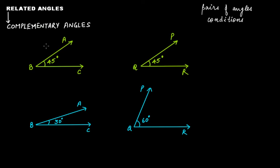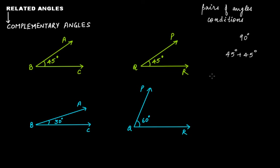The first type is complementary angles. Complementary angles are those related angles in which the sum of the pair of angles is equal to 90 degrees. For example, angle ABC and angle PQR — if you add 45 degrees and 45 degrees, you'll get 90 degrees.